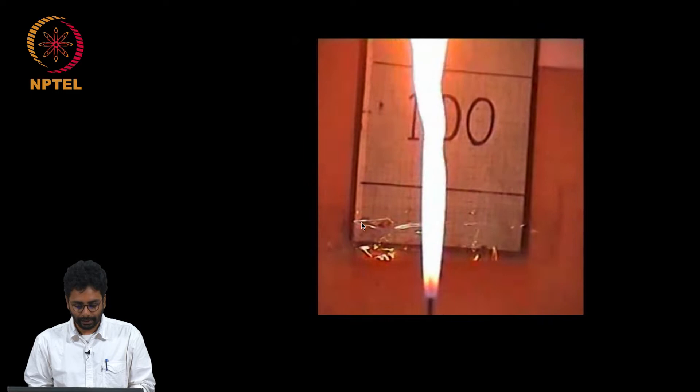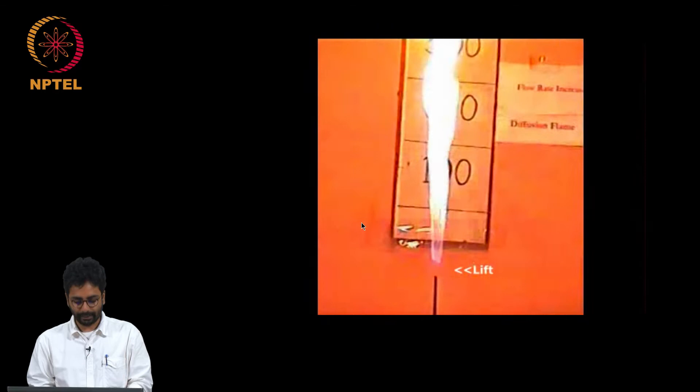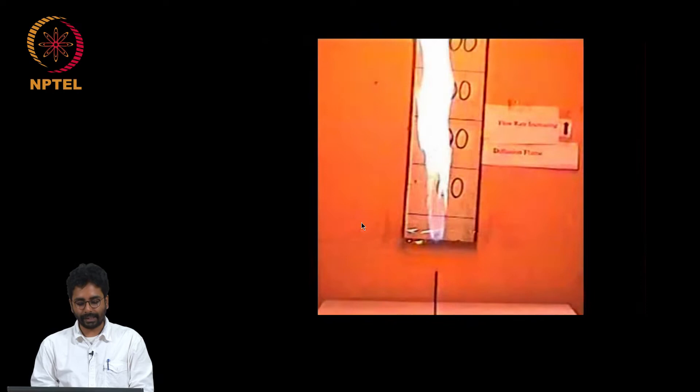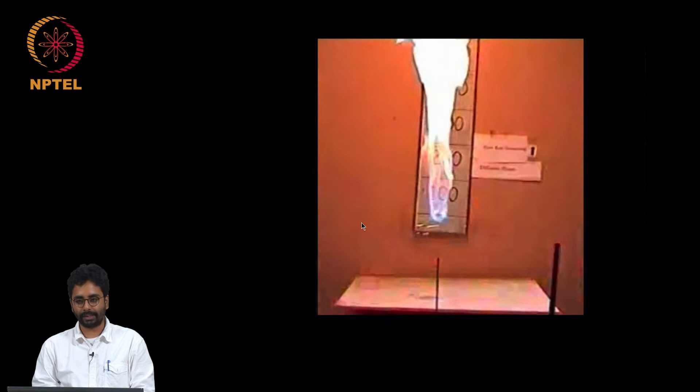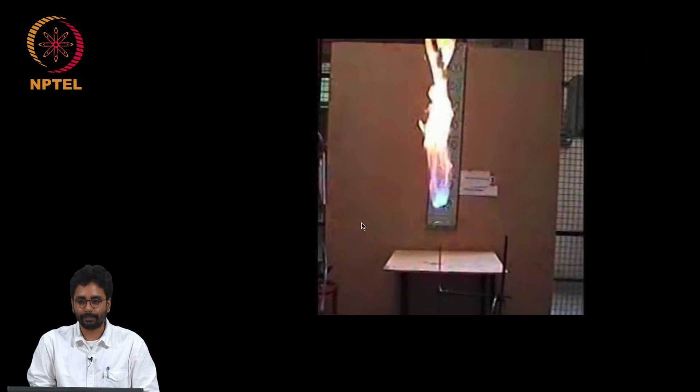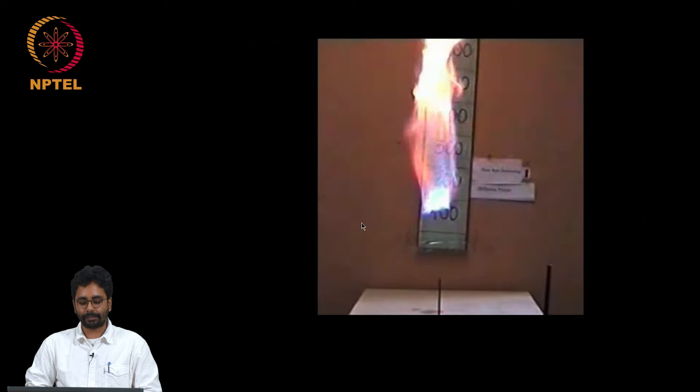You see that the tip is becoming unstable. The flame has lifted off and become turbulent. More or less the entire length of the flame is turbulent now. The base is bluish because it is lifted off. There is some pre-mixing happening until the point of ignition, and the flame stabilizes at a point where the turbulent flame speed is matched by the local velocity.